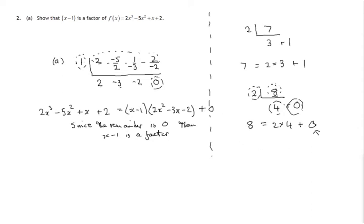So that's part A. Let's look at part B. Hence or otherwise solve f of x equals 0. We've reached a stage now where we know that this f of x,